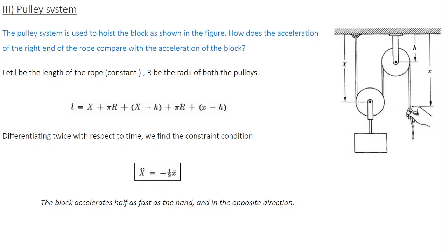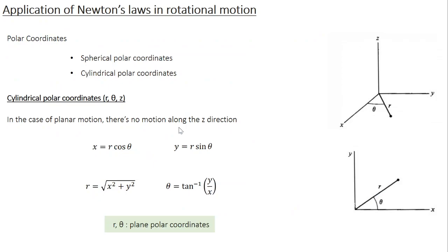So far, we have been discussing linear motion. It is now time to apply Newton's laws to the case of rotational motion. In the case of linear motion, throughout we have been following the Cartesian coordinate system. In the case of rotational motion, you can still apply Cartesian coordinates, but that is going to be a more tedious task. On the other hand, if you follow what is known as a polar coordinate system, your analysis is going to be much simpler.